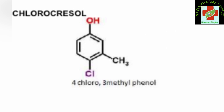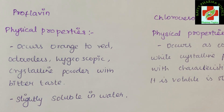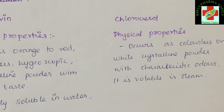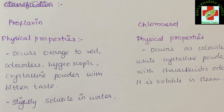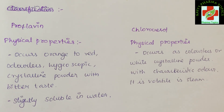For chlorocresol, the chemical structure has one alcohol group on the benzene ring, one methyl group at position 3, and one chloro group at position 4. It is also known as 4-chloro-3-methylphenol, which is the IUPAC name for chlorocresol.